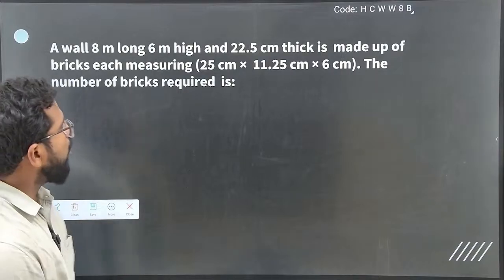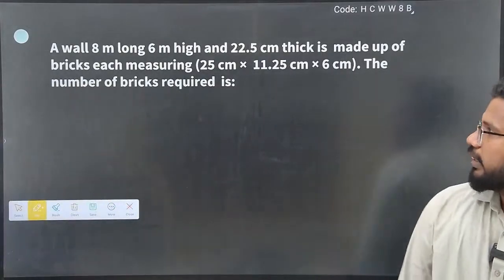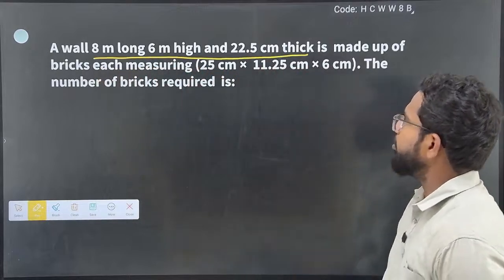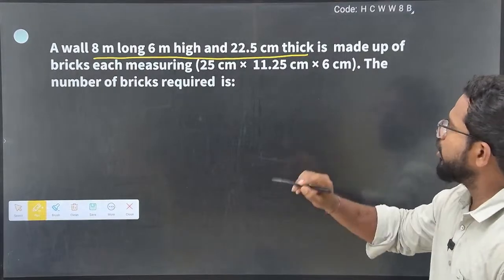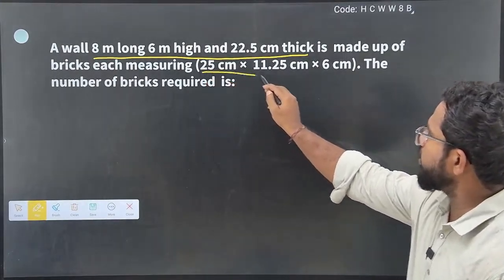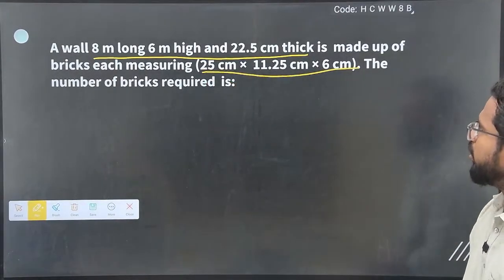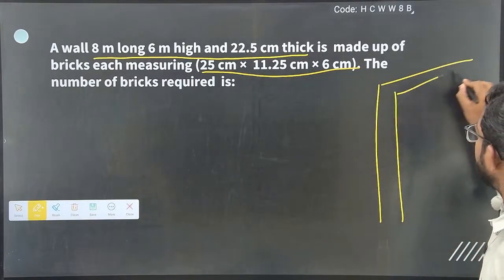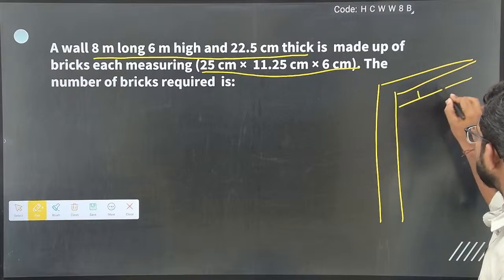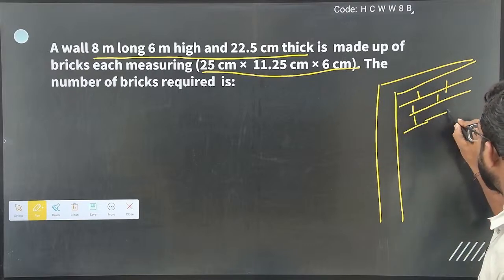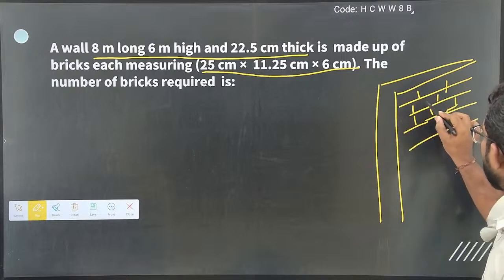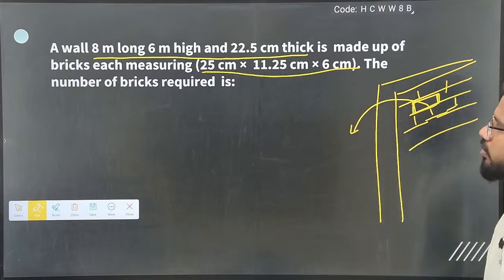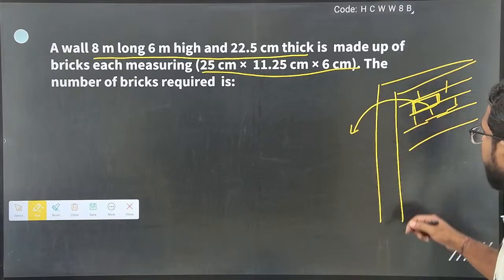Next question: a wall 8 meter long and 6 meter high and 22.5 centimeter thick is made up of bricks each measuring 25 centimeter × 11.25 centimeter × 6 centimeter. You are going to find out the number of individual bricks being used to make up the entire wall.